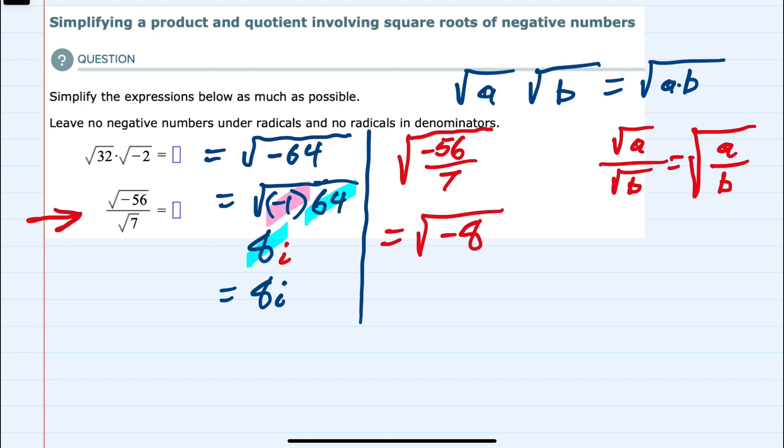And then this radical can be simplified by rewriting it as negative 1 times 8, but 8 is also 4 times 2. And it's helpful to think of it this way because since the 4 is a perfect square, it can come outside the radical as a 2.